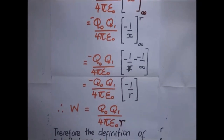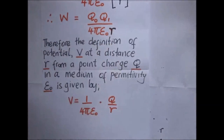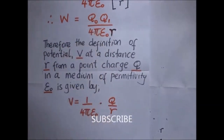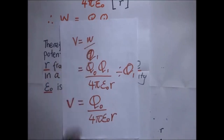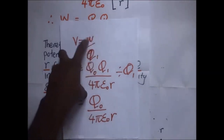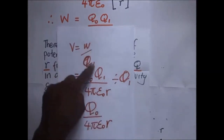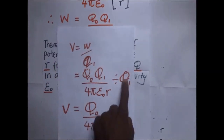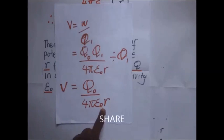The potential V at a distance r from a point charge q in a medium of permittivity ε₀ is given as follows. V equals work done per unit charge. Work is q₀q₁ over 4πε₀r from our derivation, and dividing by q₁, the q₁ terms cancel. We remain with V equals q₀ over 4πε₀r. This is our expression for the potential of a point charge.